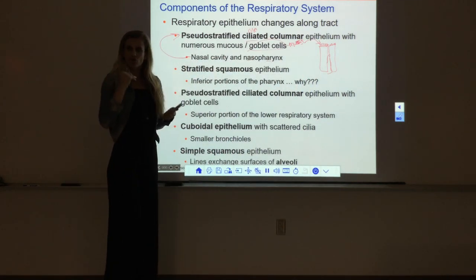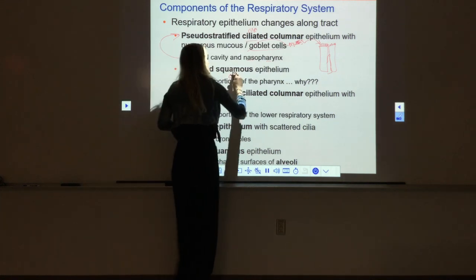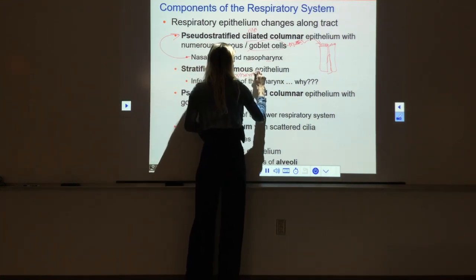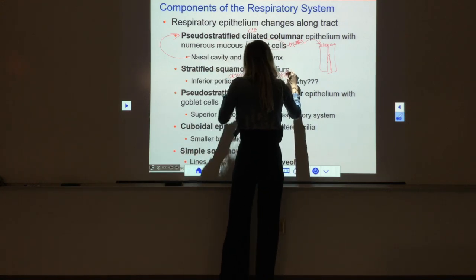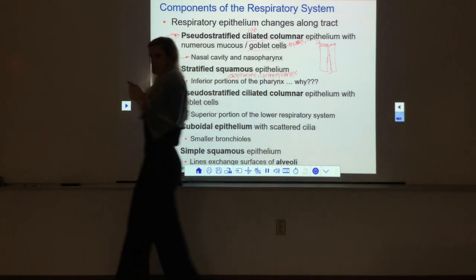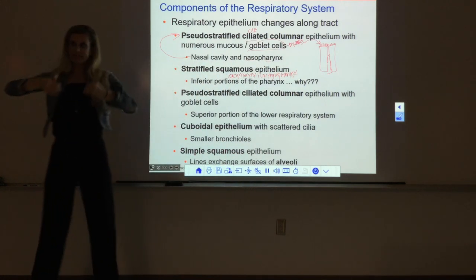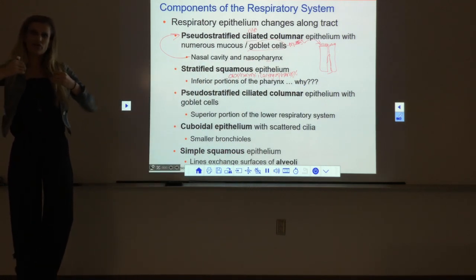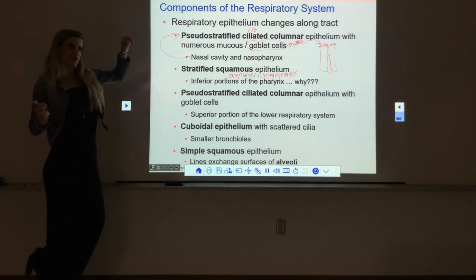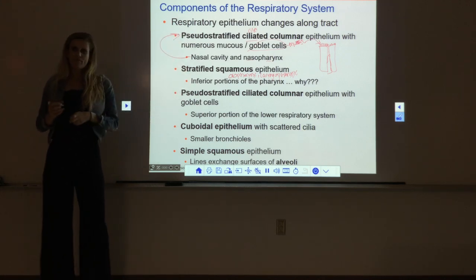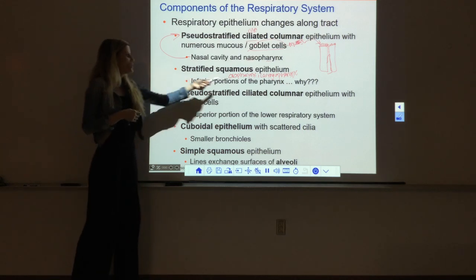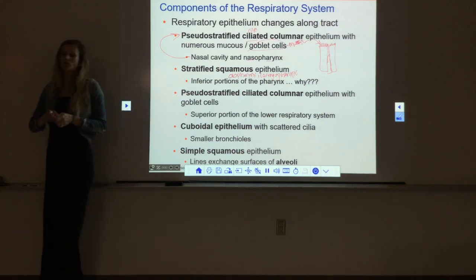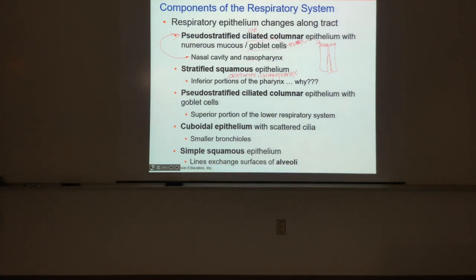Once we get to the bottom portions of the pharynx - the oropharynx and the laryngopharynx - the epithelium changes. The type of cell lining those areas is no longer the ciliated pseudo-stratified columnar. Now we have stratified squamous epithelial cells, just like we have lining the mouth. Why would the oropharynx and laryngopharynx have stratified squamous cells instead of pseudo-stratified ciliated columnar?